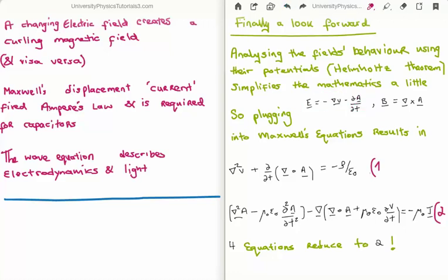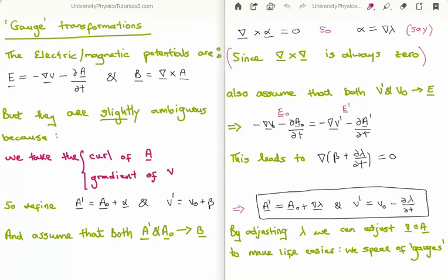Plugging these two expressions into Maxwell's equations results in two equations written only in terms of the scalar potential V and the vector potential A. These contain all the information in Maxwell's equations. They look quite complicated, but it's remarkable that every single thing we do with electrons and light can be derived from these two equations. To simplify the calculation further, we use gauge transformations.